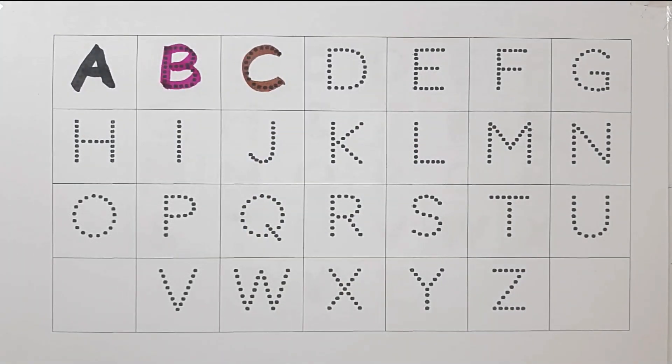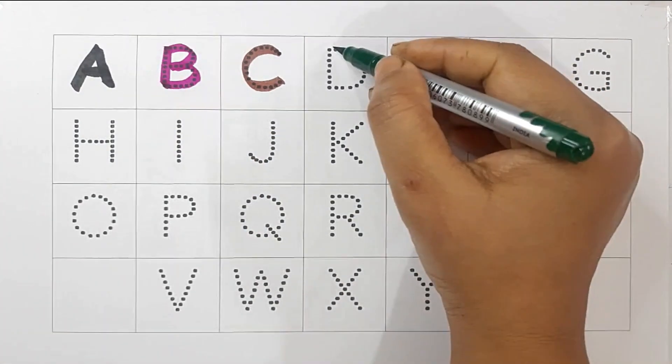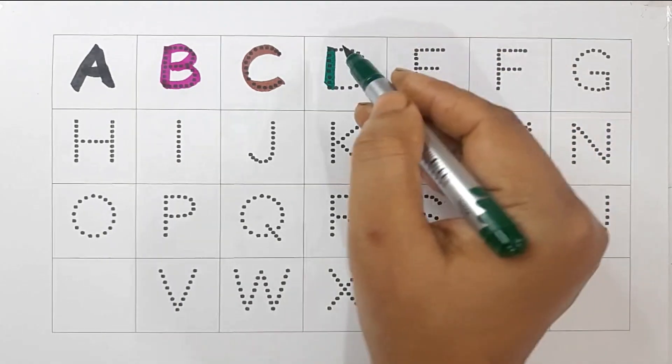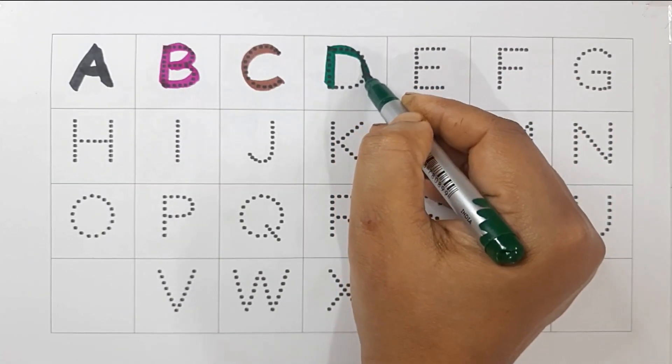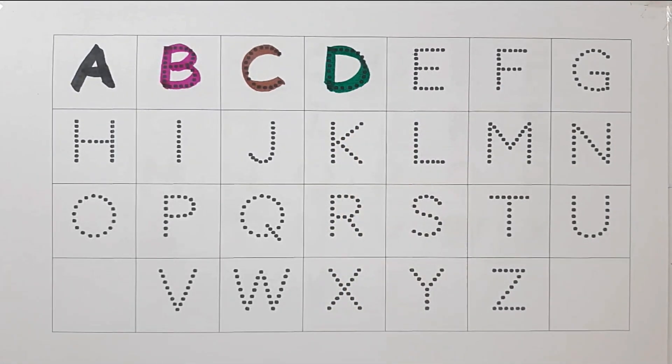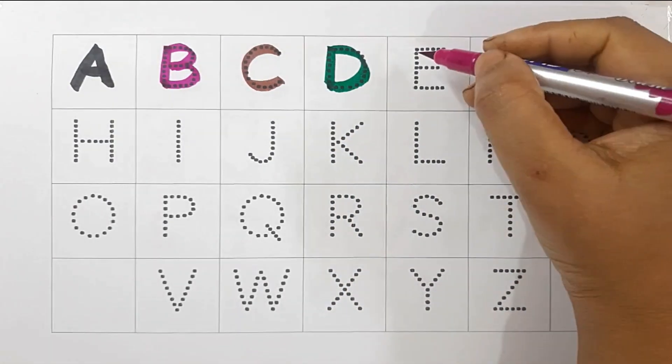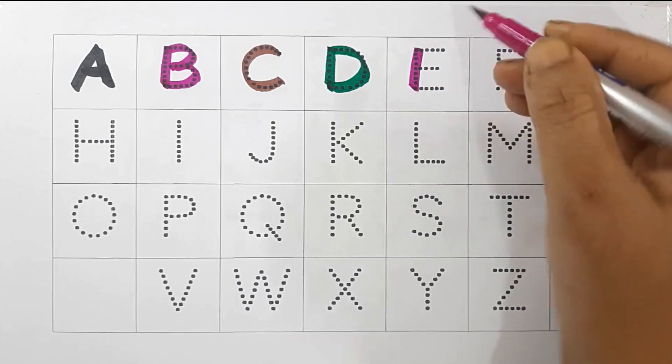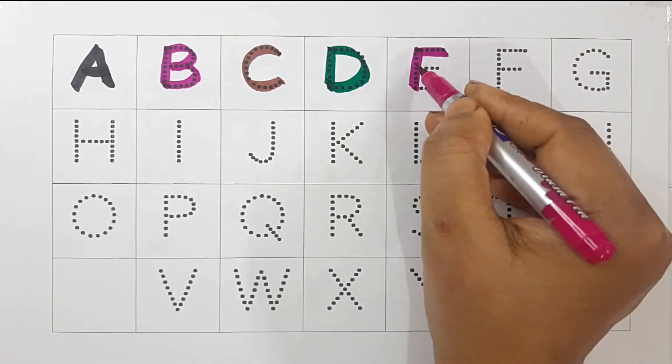Dark green color, D, D for dolphin. Purple color, E, E for eye.